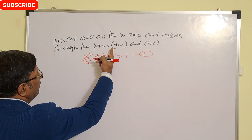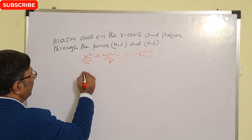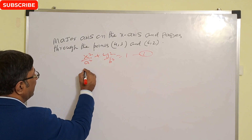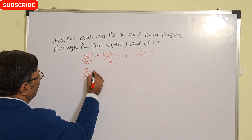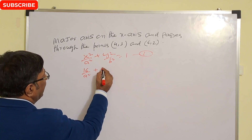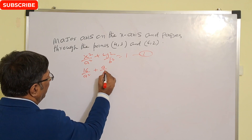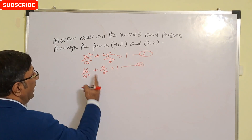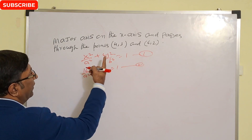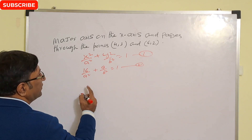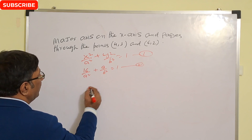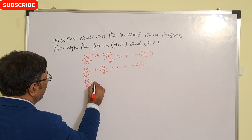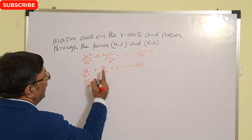This ellipse passes through the point (4,3), so x=4 and y=3. Substituting into the equation: 16 upon a² plus 9 upon b² equal to 1. This is our second equation. Again, this ellipse passes through the point (6,2), so x=6 and y=2.